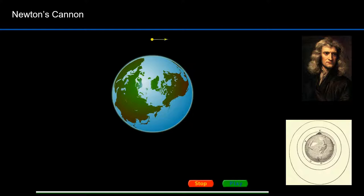If you keep adding velocity, the orbit gets circular. And if you add more velocity, the orbit gets elliptical. Newton suggested that given enough initial velocity, a cannonball could orbit the earth continuously. The moon, Newton realized, had just the right speed to orbit the earth — always falling towards it, but never reaching it.